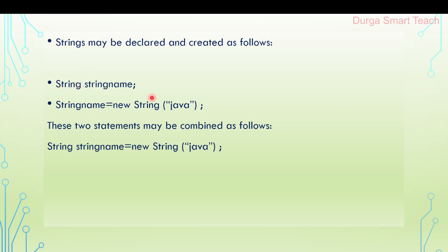For the String data type: 'String string_name' — this is the variable declaration. To allocate memory and initialize, you write: String string_name = new String("java"). So string_name is a variable and it will hold 'java'. You can combine the two statements into one line: String string_name = new String("java"). By using this way, you can represent a string.